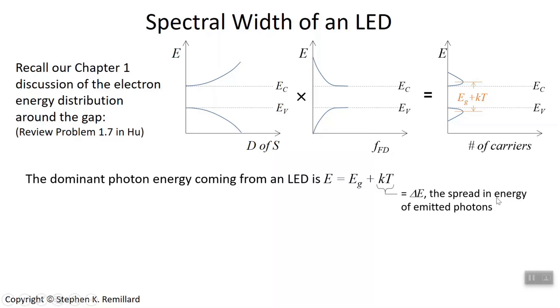It's the spread in energy. It's actually half the spread in energy of emitted photons. A bunch of them have an extra kT, but then there are also these guys out here. If the delta E, this spread in energy, is kT, we need to turn it into something that's more practical for an experimentalist.